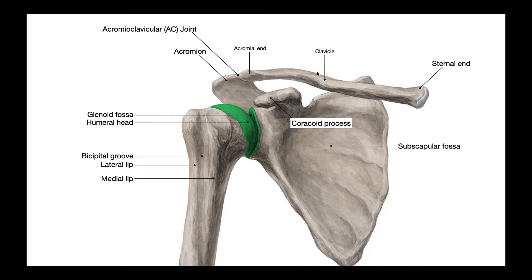Let's start with the clavicle. The clavicle has two ends: the sternal end, which is medial or proximal, and the acromial end, which is lateral or distal. The sternal end articulates with the manubrium of the sternum — that would be the sternoclavicular joint, not labeled here. The acromial end of the clavicle articulates with the acromial process or acromion of the scapula.